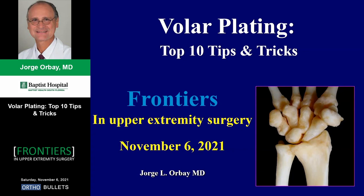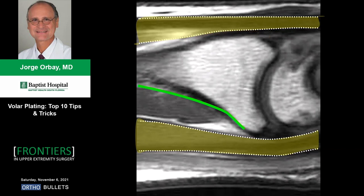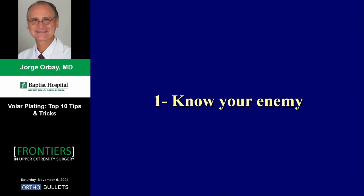We all know that the right place to apply internal fixation on the wrist is on the volar side, because on the dorsal aspect the extensor tendons are always in contact with the bone surface. Anything placed dorsally will affect tendon function. Palmarly, there is a large volume of space occupied by the pronator quadratus where you can apply fixation without harm, as long as you have a good reduction and avoid the watershed line distally.